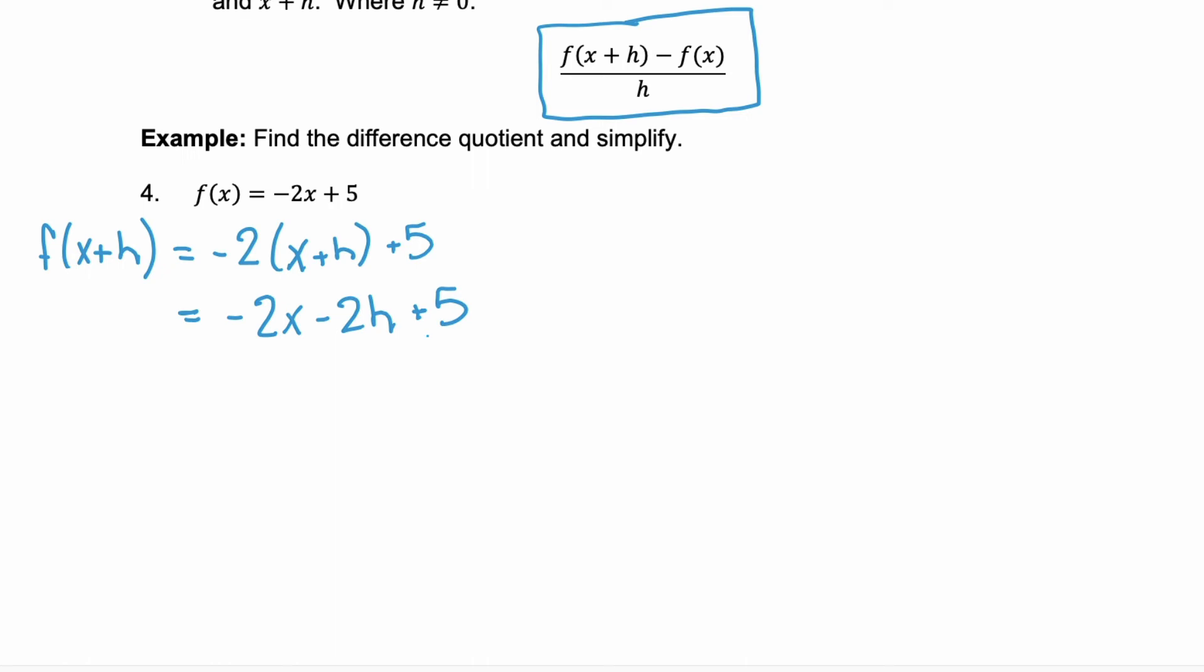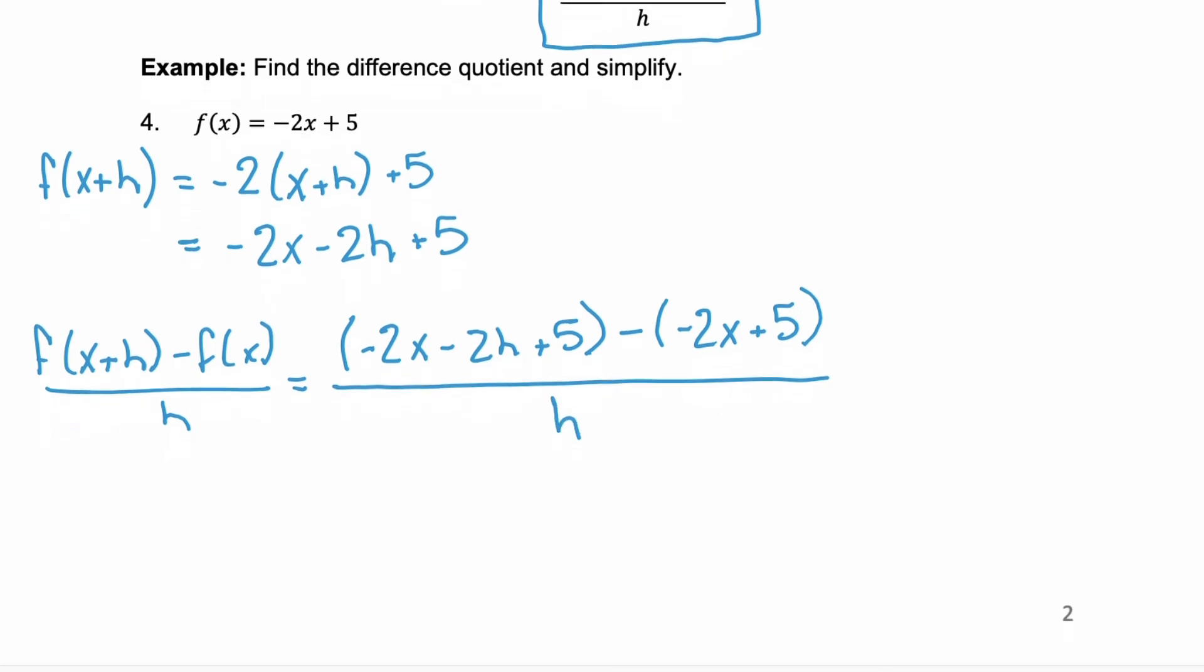Then we move to the next step which is putting everything together. We found f(x + h). We're given f(x). So we're going to put everything together into the difference quotient formula. So we start with f(x + h). That's what we just found and I put it in parentheses to start and then I subtract and I put f(x) also in parentheses. I do this because I'm subtracting and because I'm subtracting in that numerator I want to make sure I'm distributing that subtraction sign all the way through. And by putting it in parentheses to start we'll make sure I do that.